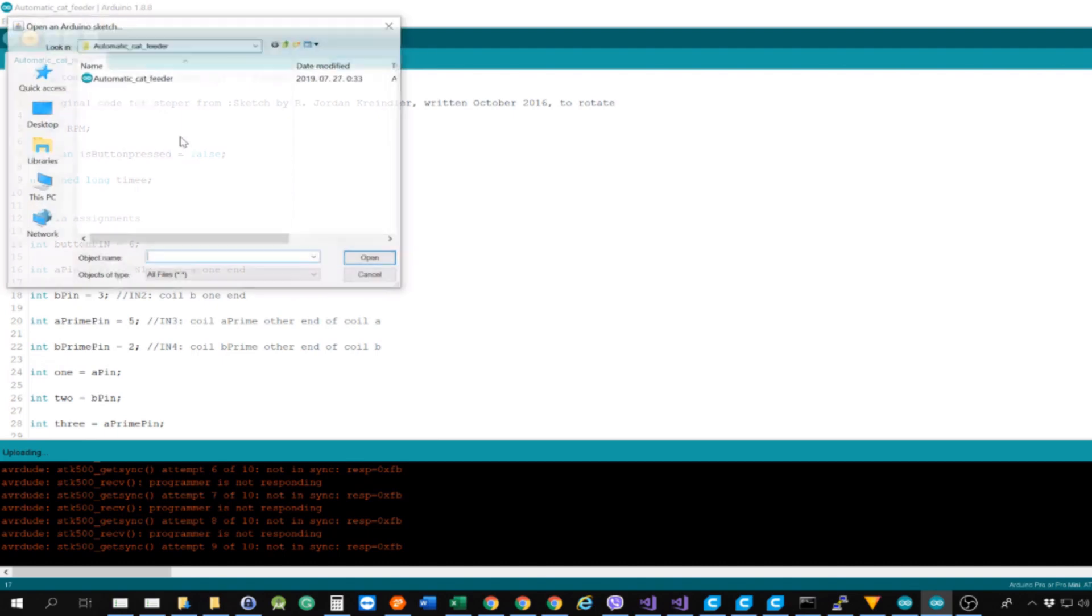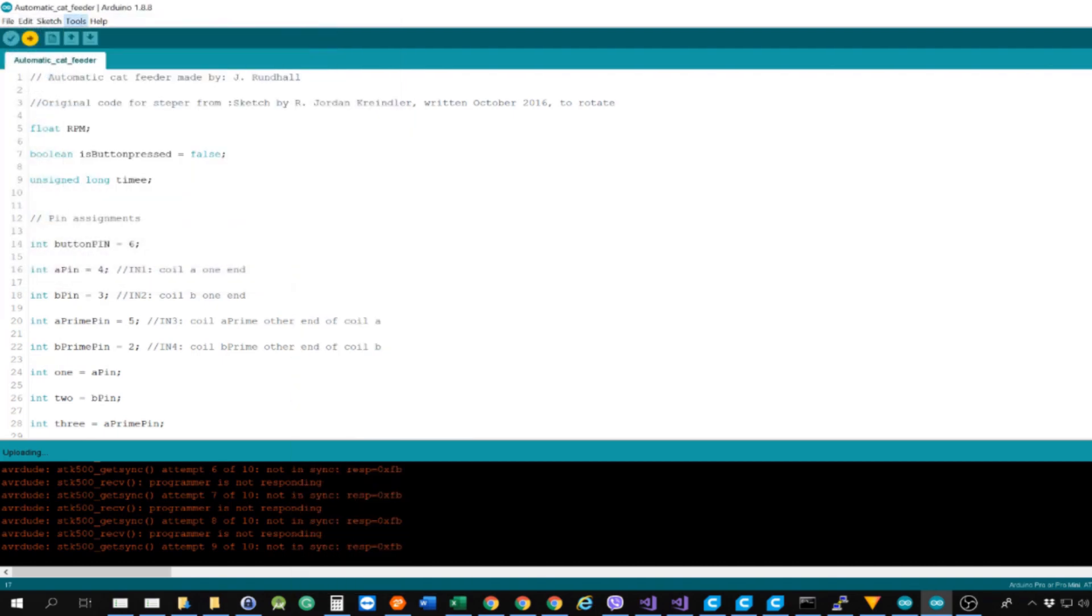Just connect all the cables according to the picture and upload the Arduino code to the microcontroller through USB.